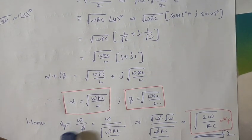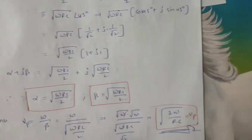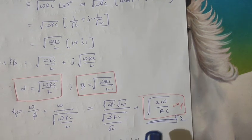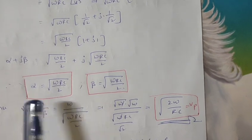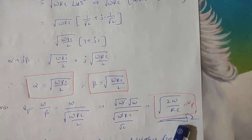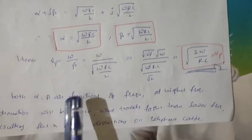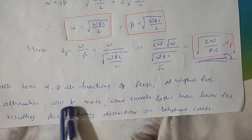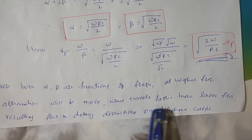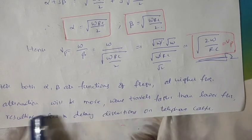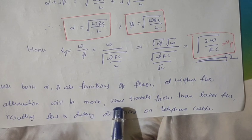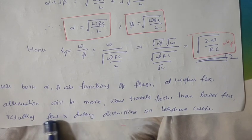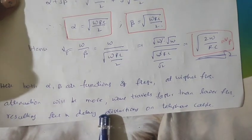The phase velocity is ω/β, which gives √(2ω/RC). So in an ordinary telephone cable, the attenuation constant, phase constant, and phase velocity all depend upon the frequency. As the frequency increases, the attenuation will be more. At high frequencies, waves travel faster than at lower frequencies, which results in frequency distortions as well as delay distortions on a telephone cable. That is why, to reduce these frequency and delay distortions, we are going to add some amount of inductance on the telephone cable.